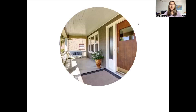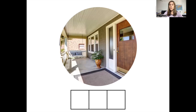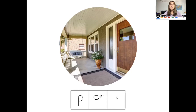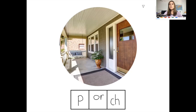Our next word is porch. How many sounds do you hear in the word porch? There are three sounds in the word porch. The first sound is P — the letter P. The next sound is 'or,' spelled O-R. And the last sound is CH. It's not a single letter — it is the CH digraph that makes the CH sound. This is how you spell porch.